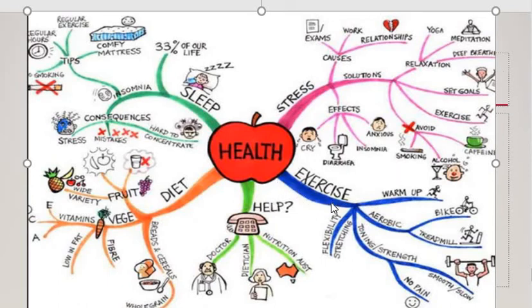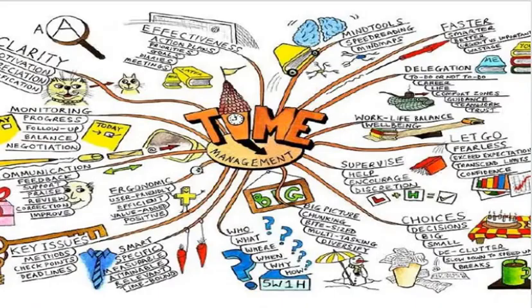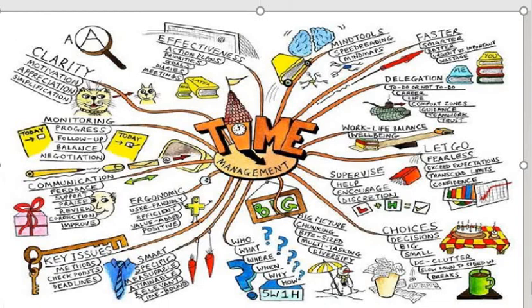Another line-up is exercise — more on recommendations like warm-up, etc. And 'help' deals with who will be helping. Another example: time management as the center. To have a good mind map and see what happens if you undergo stress, the line-ups include clarity, effectiveness, etc.